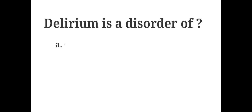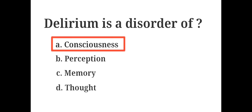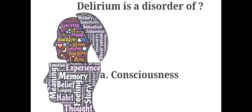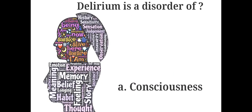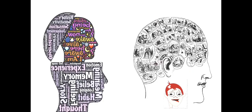Delirium is a disorder of: A. Consciousness, B. Perception, C. Memory, D. Thought. The answer is A. Consciousness. Delirium is a condition of severe confusion and rapid changes in brain function.